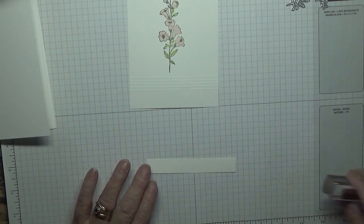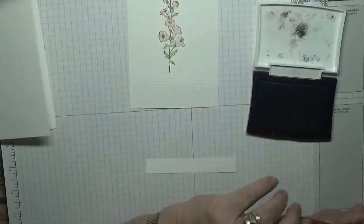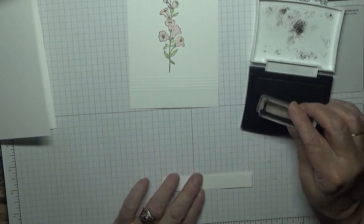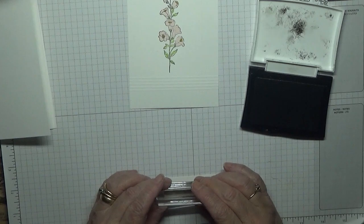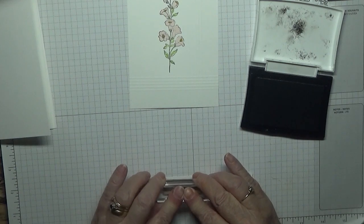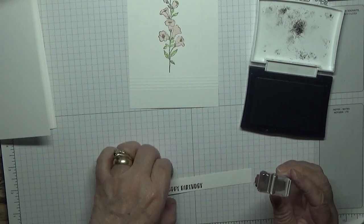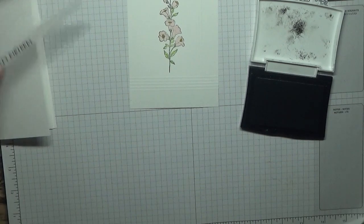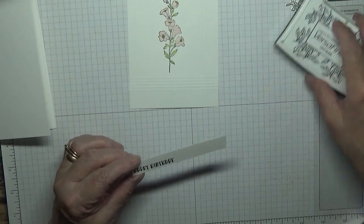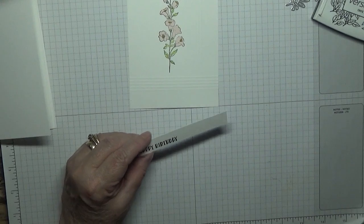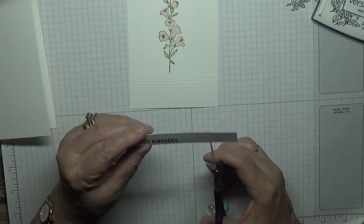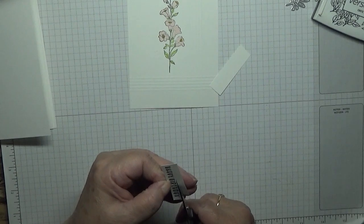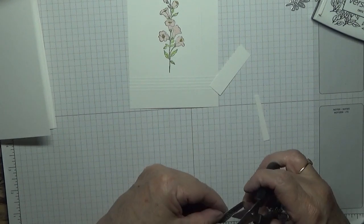I've got this strip here to do our sentiment, and this is just a Happy Birthday that I've pulled off another stamp set. I'm not sure what stamp set that is because it's loose in my box. I think it's off a really old stamp set. In fact, that's a different one from the one I used there. I don't mind if it will do. It's not even straight.